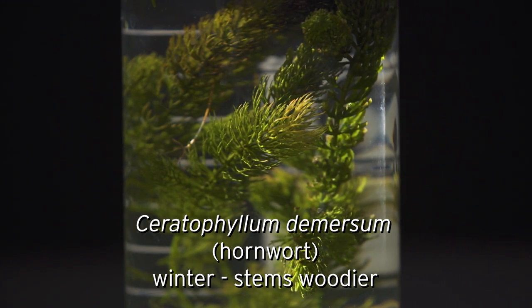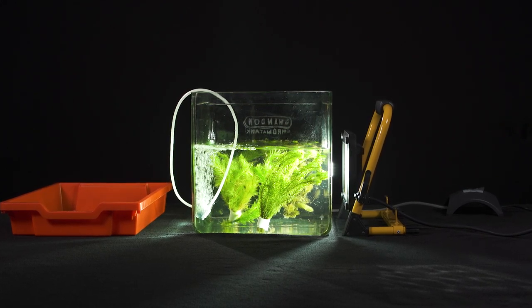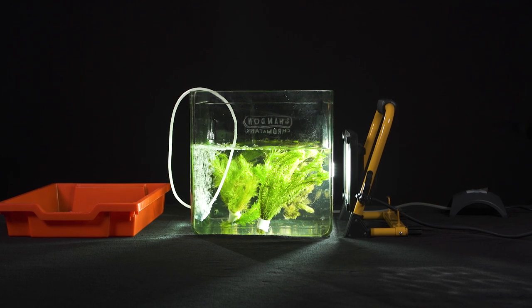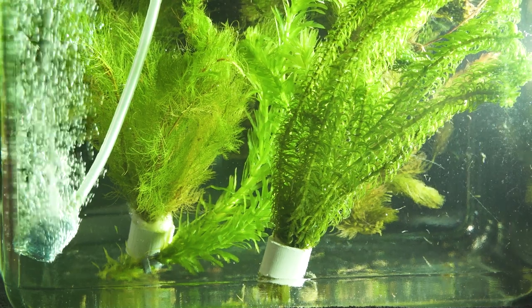If you're using pondweed collected from an outdoor pond, do consider that during the darker and colder months, it will not be photosynthesizing at a particularly fast rate. It's a good idea to get this weed out of the pond at least a couple of weeks before the practical is planned to take place, and illuminate it with a bright light in an aerated tank to allow the photosynthetic machinery to become active again.